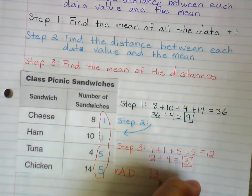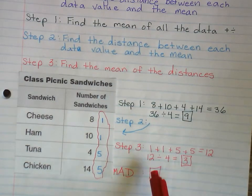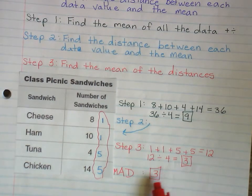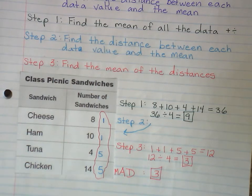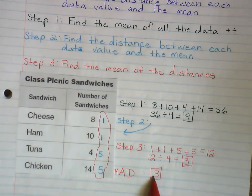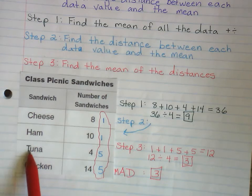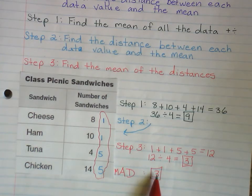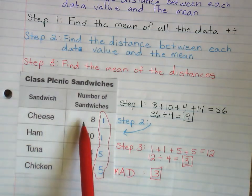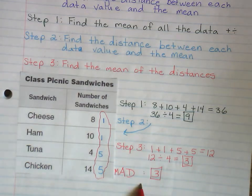But what does it mean that the MAD is 3? On average, the number of sandwiches for each type differs — or is about 3 away from — the average. It might be 3 more, it might be 3 less, but on average each one is 3 away.